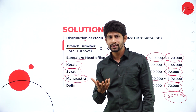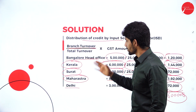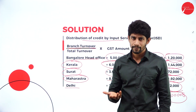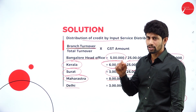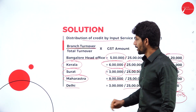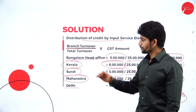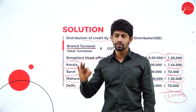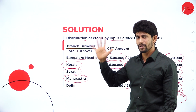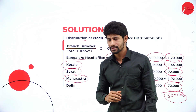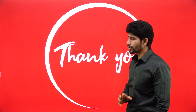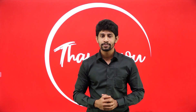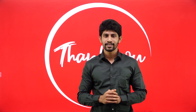The formula is: branch turnover divided by total turnover into GST amount, or GST amount into branch turnover divided by total turnover. With this simple formula you can easily distribute the GST amount amongst your different branches. With this, I am going to wind up this session. I will come up with a few more new videos with new concepts. Until then, thank you all. Have a nice day. Namaste.